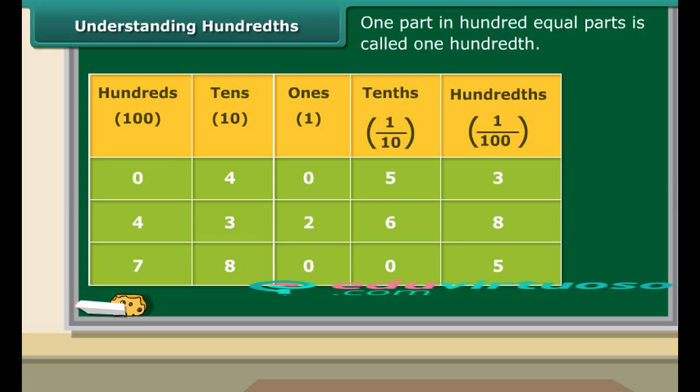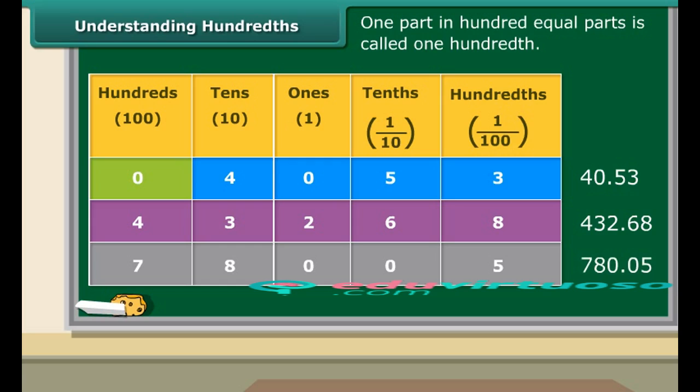Now concentrate on the table and let us read decimals from it. Look at the first row. 40 plus 5 tenths plus 3 hundredths will make 40.53. Now focus on the second row. 4 hundreds plus 3 tens plus 2 ones plus 6 tenths and 8 hundredths will make 432.68. Now pay attention to the third row. 7 hundreds plus 8 tens plus 5 hundredths will make 780.05.